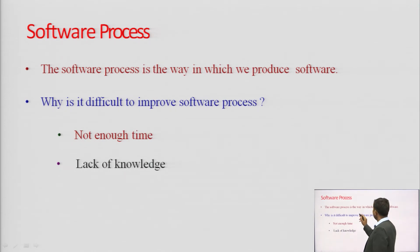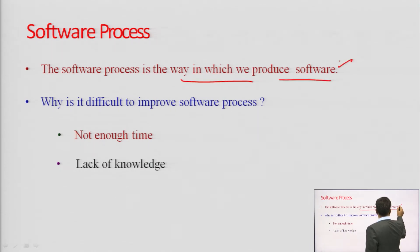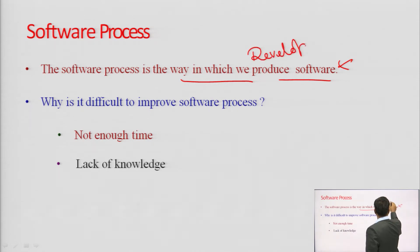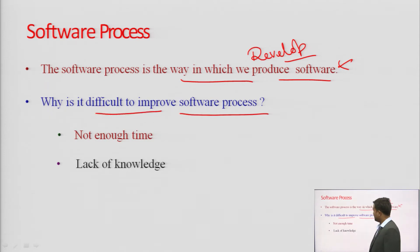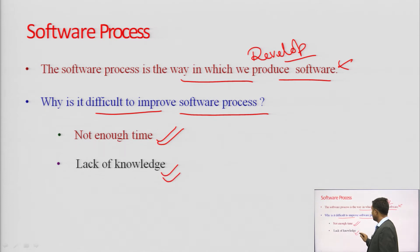Software process is the way by which software is produced and developed. The difficulties in improving a software process include not enough time and lack of knowledge — both are most important challenges.